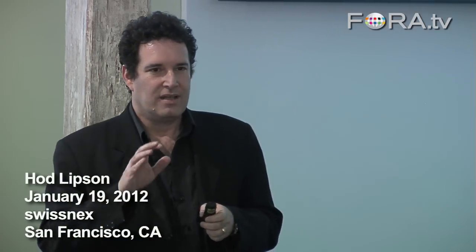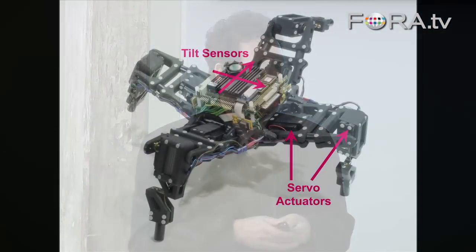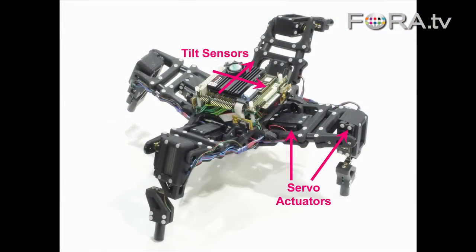This robot needs to learn how to walk. But the challenge is that it does not know what it looks like. You can see it has four legs, but the robot has no clue what it looks like. It doesn't know if it's a snake, if it's a spider, if it's a tree. It has no clue how these eight motors and legs are arranged — it doesn't even know about legs.